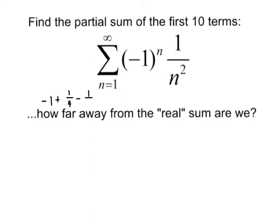The next term would be positive one-fourth, then negative one-ninth, positive one-sixteenth, negative one-twenty-fifth, positive one-thirty-sixth, negative one-forty-ninth, positive one-sixty-fourth, negative one-eighty-first, and positive one-one-hundredth. And those are the first ten terms.